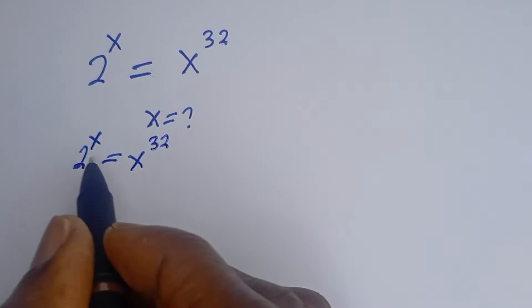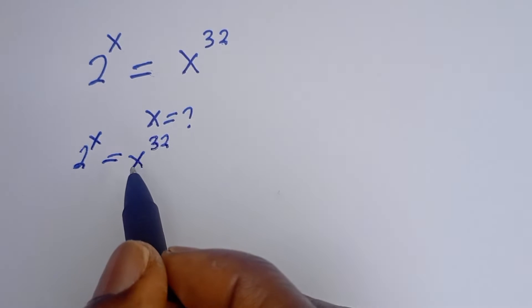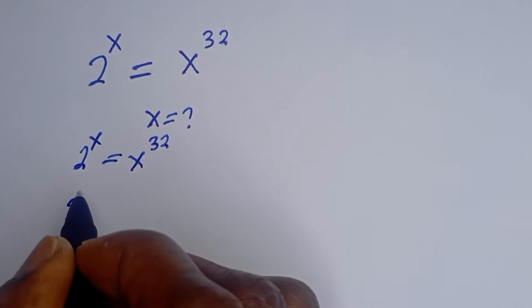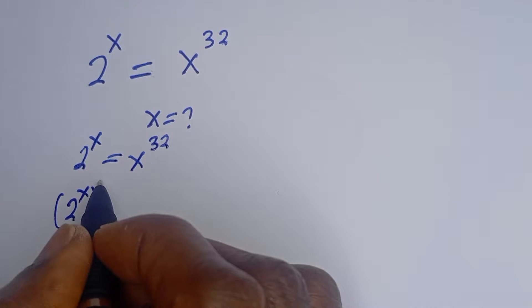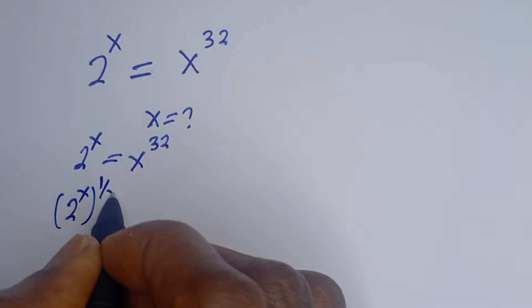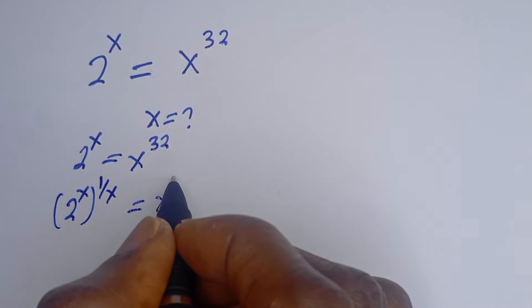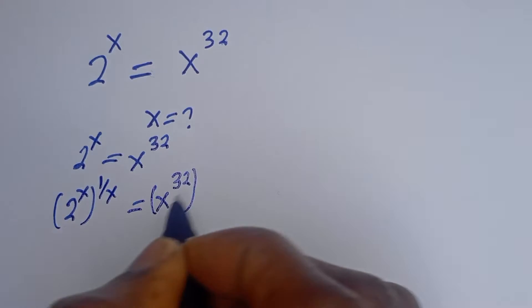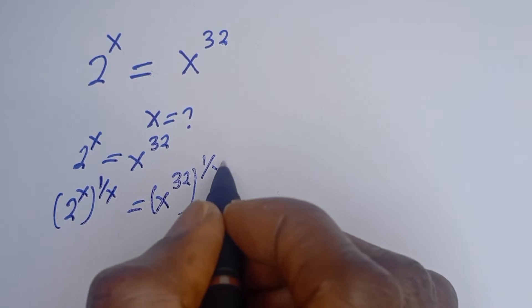Now let's multiply the exponent of both sides by 1 over S. That is, 2 to the power of S multiplied by 1 over S is equal to S to the power of 32 multiplied by 1 over S.